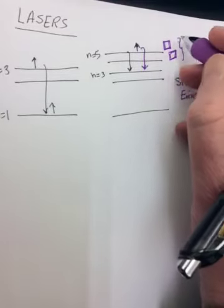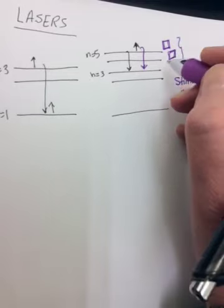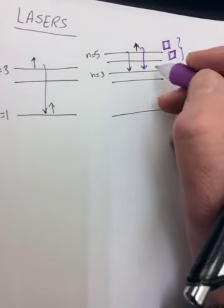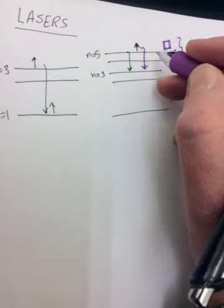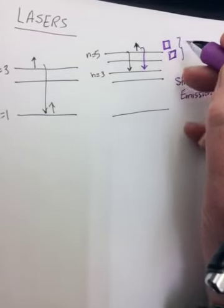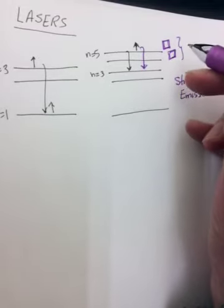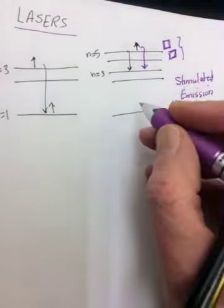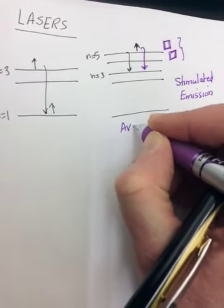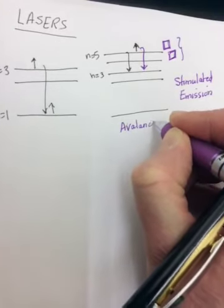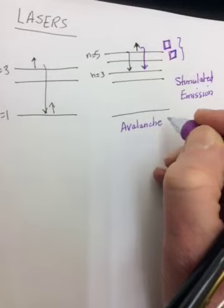These two photons then will leave the atom, and they'll go and strike two more atoms that have been excited with the same photon. And so now four will be emitted, and those four will strike four more atoms, and then it'll become eight, and then 16, and then 32. And before you can blink, what you get is an avalanche of photons that are all the same frequency, all in phase with each other.